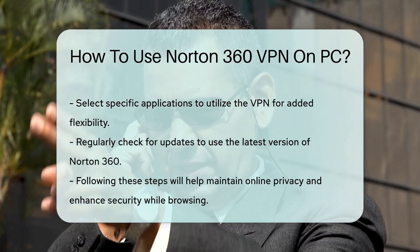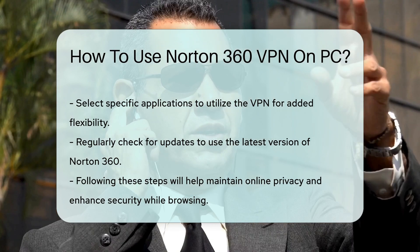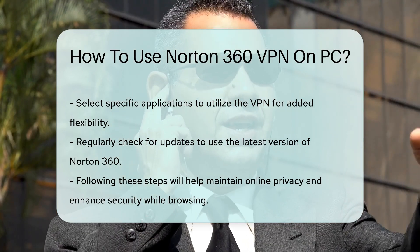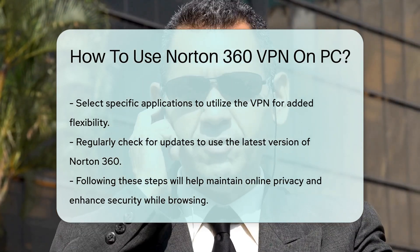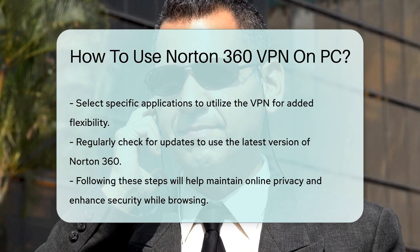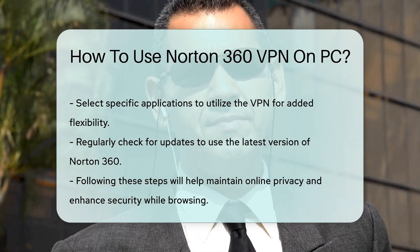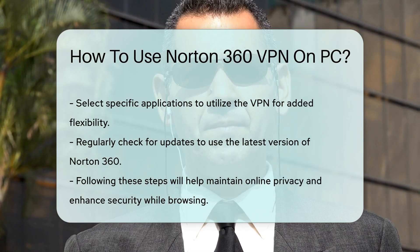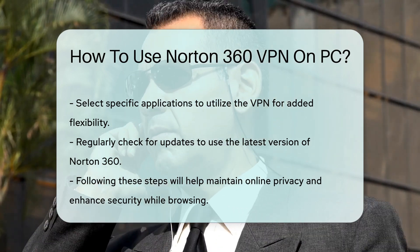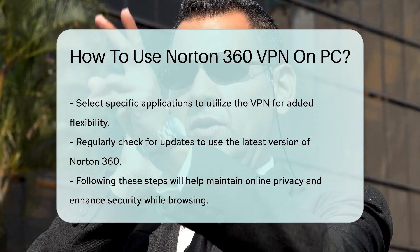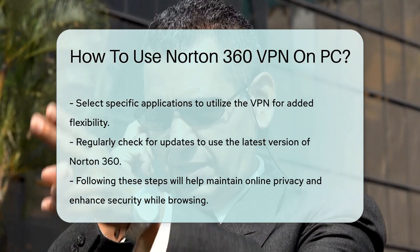In summary, using Norton 360 VPN on your PC involves downloading the software, signing in, activating the VPN, and selecting a server. Following these steps will help you maintain your online privacy and enhance your security while browsing.